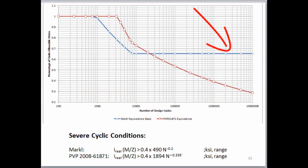The blue line uses Markle's equation for mean failure, and the red line uses the PVP 2008-61871 equation for piping mean failure. We can see that the two lines cross at 20,000 cycles, and that above 20,000 cycles, we should be more careful. The red line is the best estimate we have for knowing when we have a severely cyclic piping system and when we should pay more attention to our calculated stress.